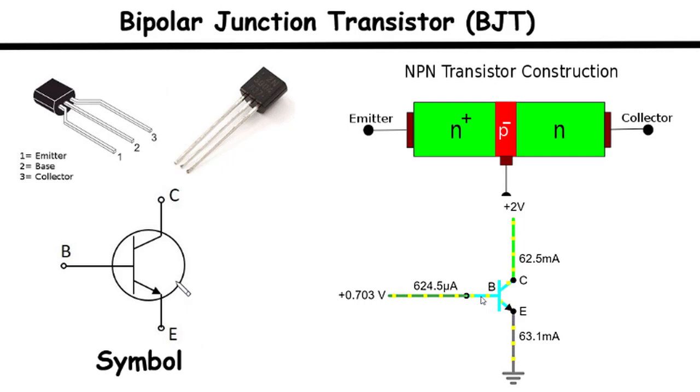NPN transistor construction. Now, let's delve into the construction of an NPN transistor to gain a deeper understanding of its internal structure. The NPN transistor consists of three distinct layers: the emitter, the base, and the collector.